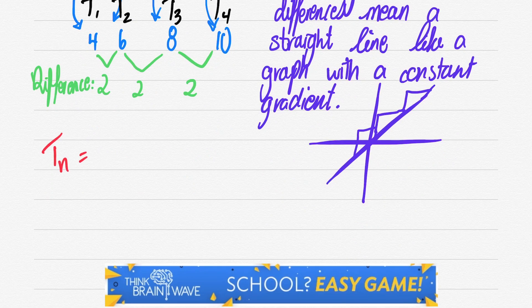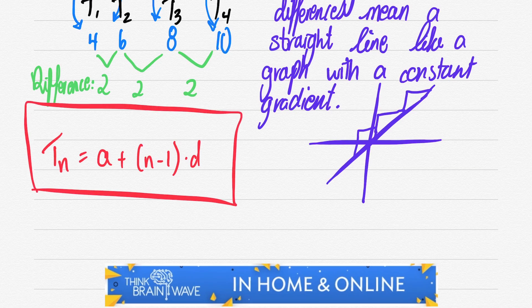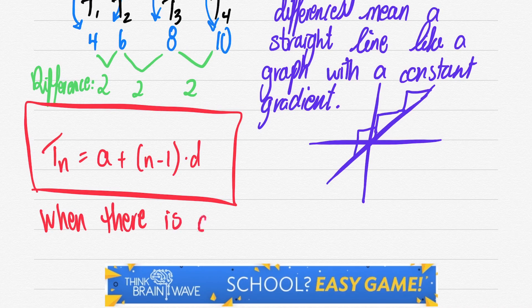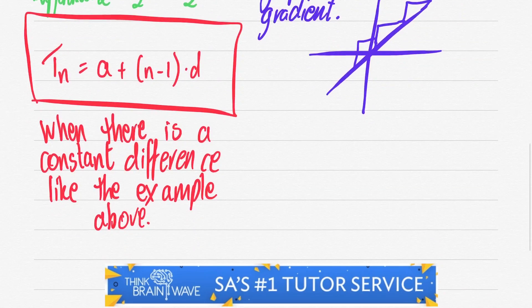Now there's a general solution for working at these sort of patterns which makes it a lot easier if they get a bit more confusing. The general solution is a plus n minus 1 in brackets times by d, when there's a constant difference like the example above.